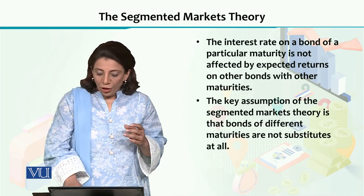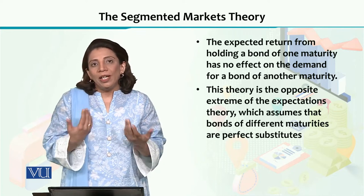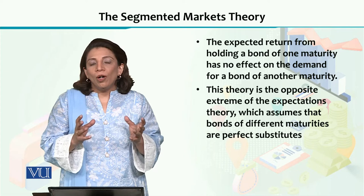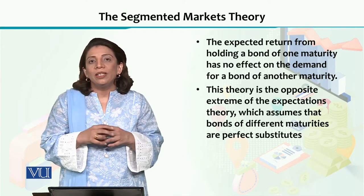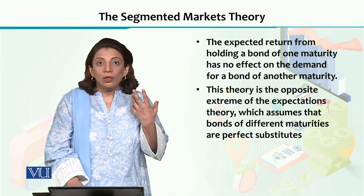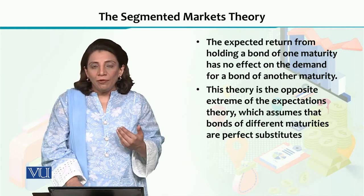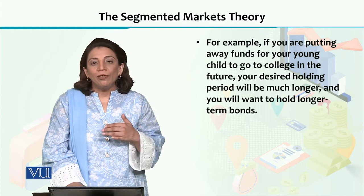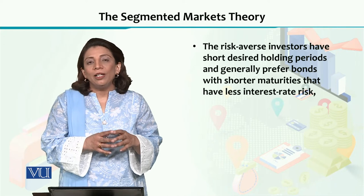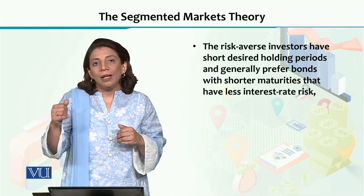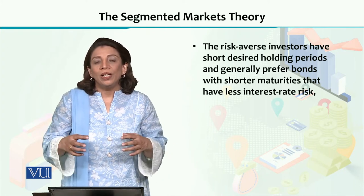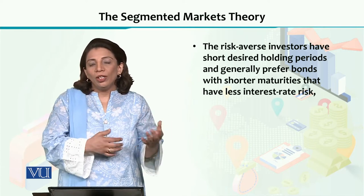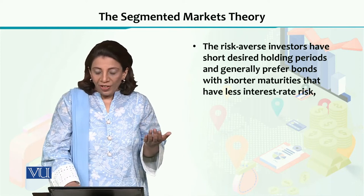The key assumption made to explain the theory of segmented markets is that bonds with different maturities cannot be considered as substitutes of each other, because their investors are altogether different — their preferences are different, and the factors they consider when investing in short-term or long-term instruments are completely different. Therefore, the dynamics or factors of the short-term bond market do not influence those of the long-term bond market, and they cannot be considered as alternative options.